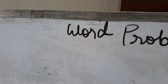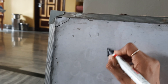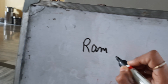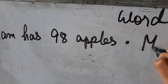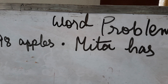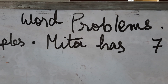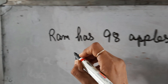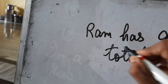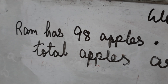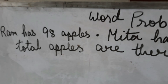So I am writing here — word problems. What is miss writing? Word problems. Now see. Ram has 98 apples. Mita has 79 apples. How many total apples are there?